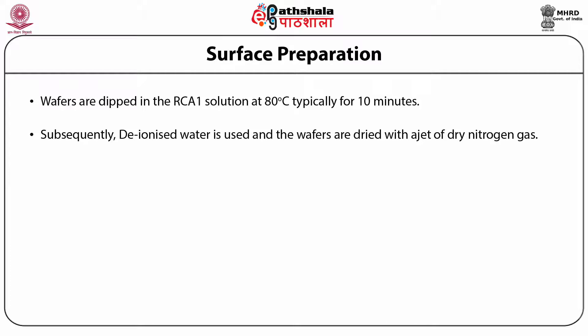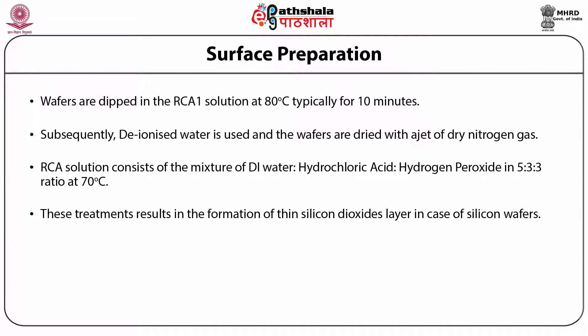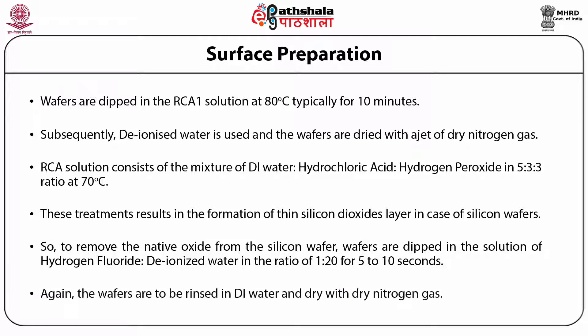RCA2 cleaning removes ionic and metallic contaminations present on the surface of the wafer. The RCA2 solution consists of a mixture of DI water, hydrochloric acid, and hydrogen peroxide in a 5:3:3 ratio at 70 degrees Celsius; cleaning is done for 20 minutes, and finally the wafers are rinsed in DI water and dried. These treatments result in the formation of a thin silicon dioxide layer in the case of silicon wafers, which can lead to recontamination since the bare silicon surface is very reactive. To remove the native oxide, wafers are dipped in a solution of hydrogen fluoride and deionized water in the ratio of 1:20 for 5 to 10 seconds, then rinsed in DI water and dried with dry nitrogen gas.